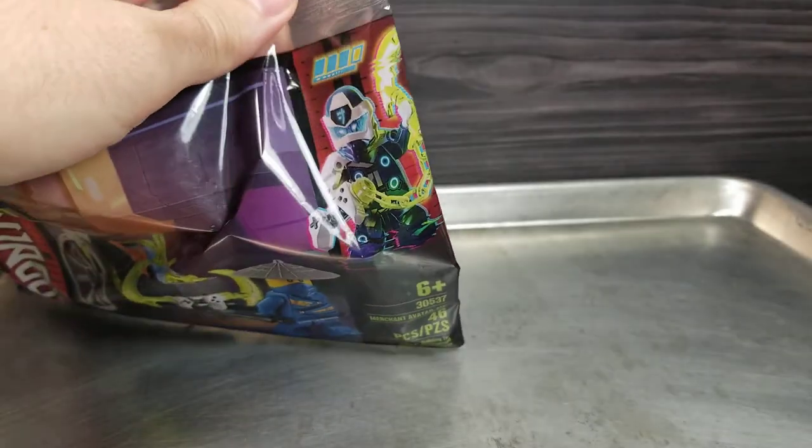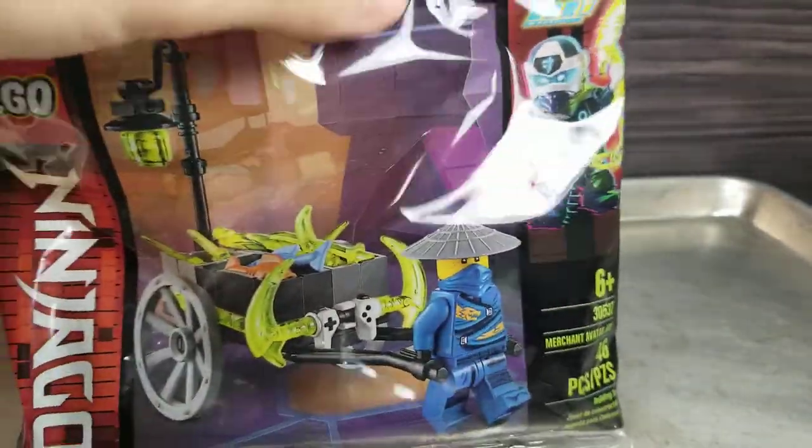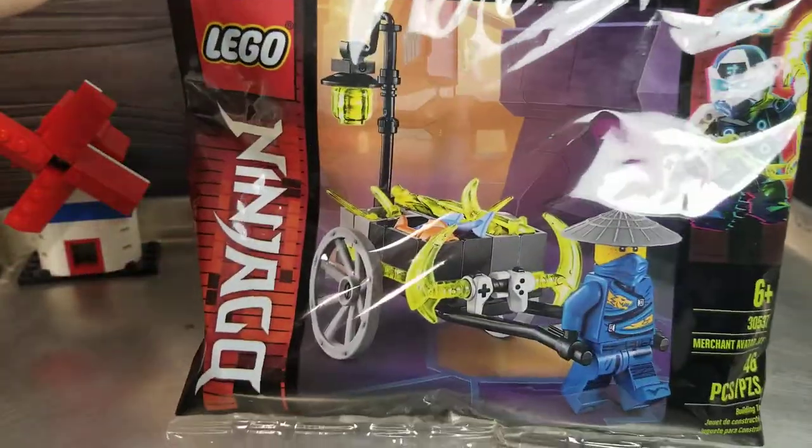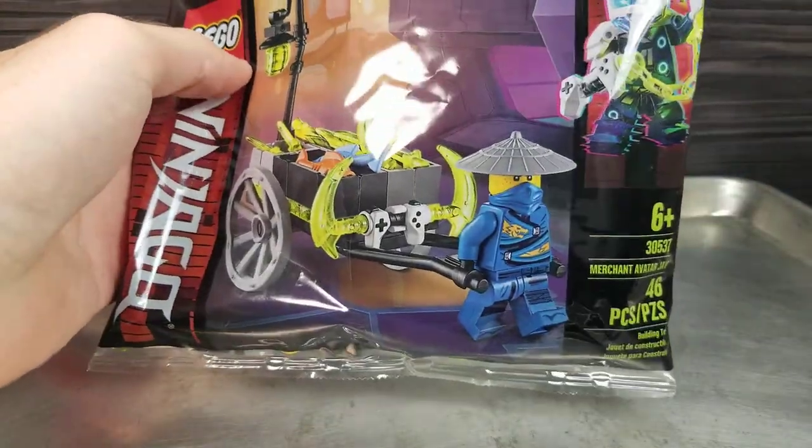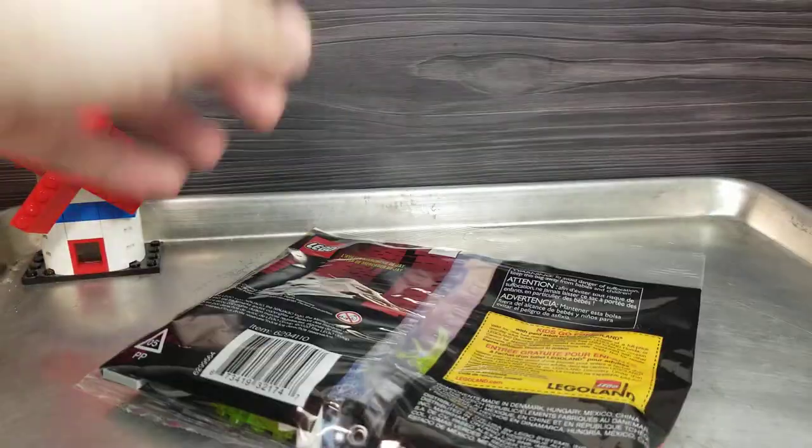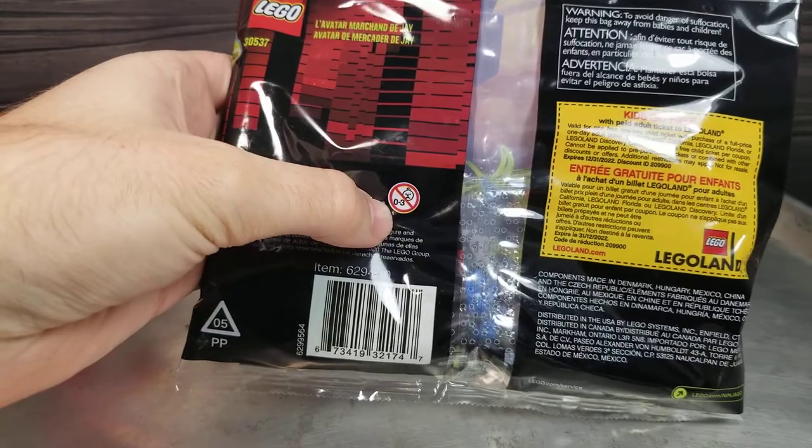It shows this cool Jay in the picture with some art and he's got a video game controller weapon and stuff. The picture on the box or bag - it's a bag - is kind of boring looking, but we're getting 46 pieces and the minifigure. That's pretty damn good.